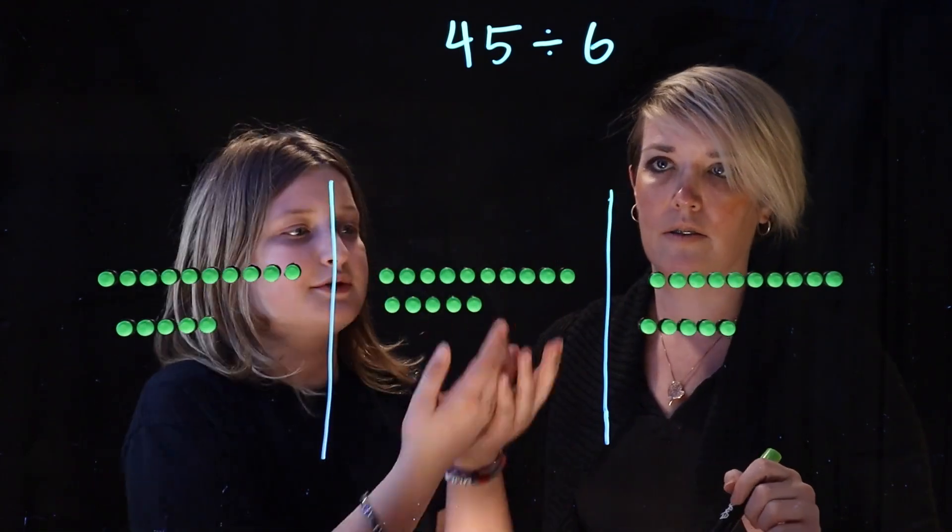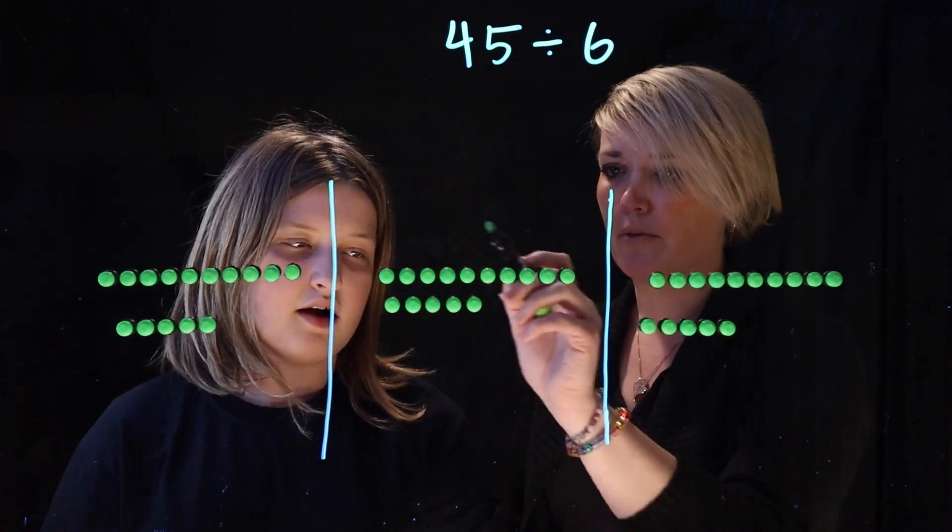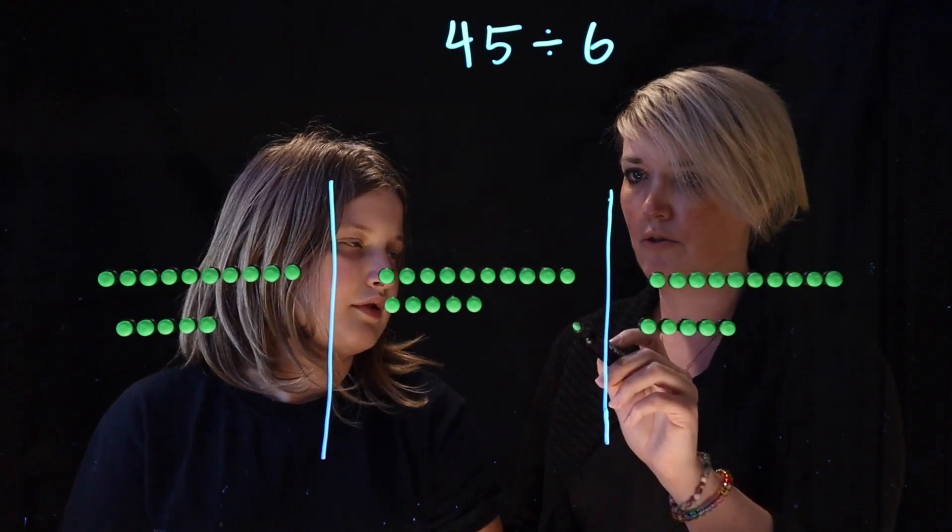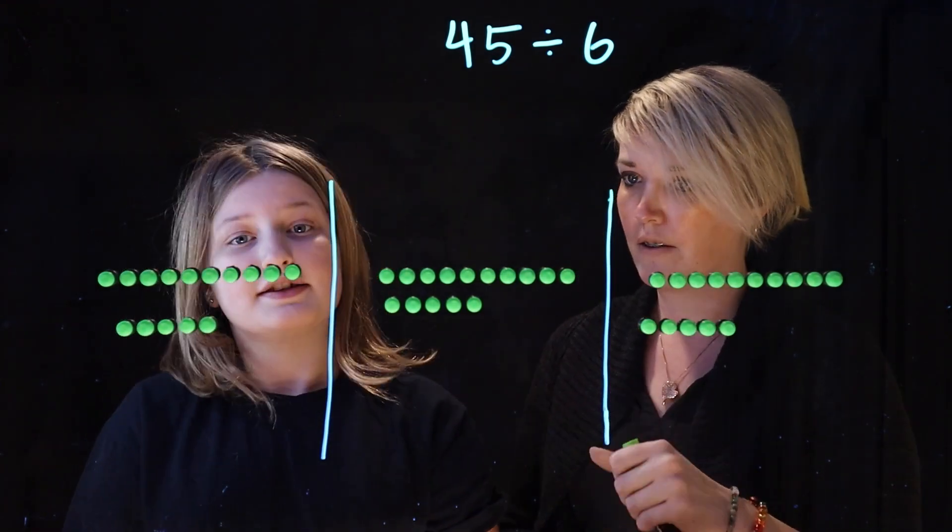All right, so let's actually draw some lines here so people can see the 3 groups. 1 group, 2 groups, 3 groups. But we need 6 groups. So in 1 group there's 15. So if we divide that by 2, I know it is 7.5.